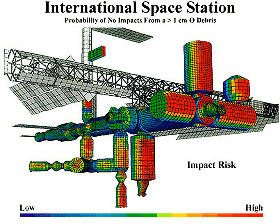FTA may be qualitative or quantitative. When failure and event probabilities are unknown, qualitative fault trees may be analyzed for minimal cut sets. For example, if any minimal cut set contains a single base event, then the top event may be caused by a single failure. Quantitative FTA is used to compute top event probability and usually requires computer software such as CAFTA from the Electric Power Research Institute or SAFIRE from the Idaho National Laboratory. Some industries use both fault trees and event trees.